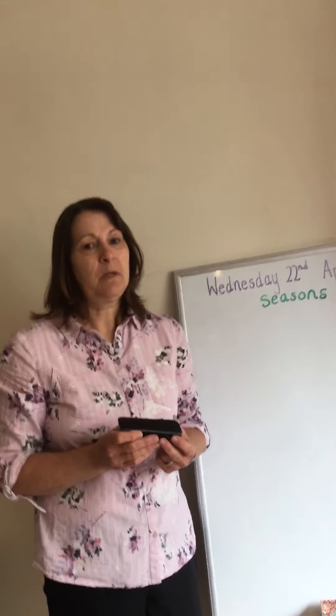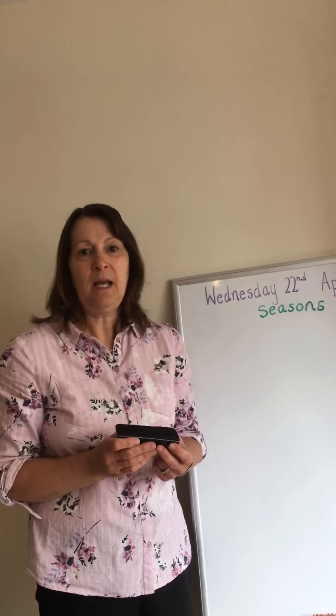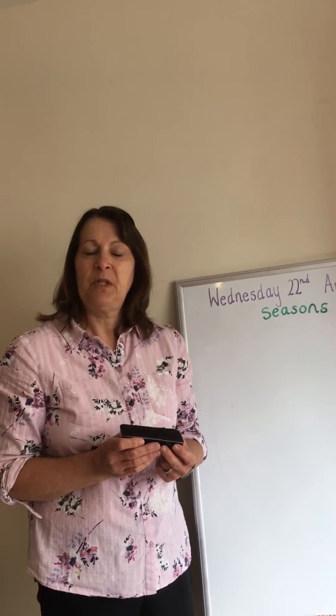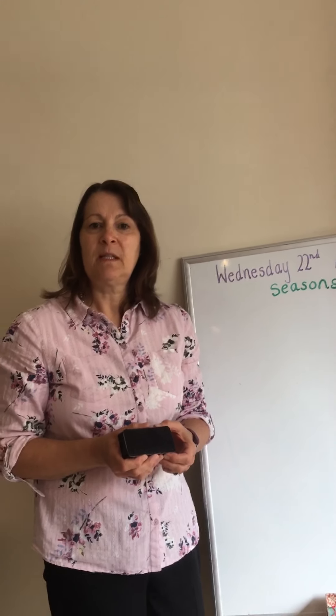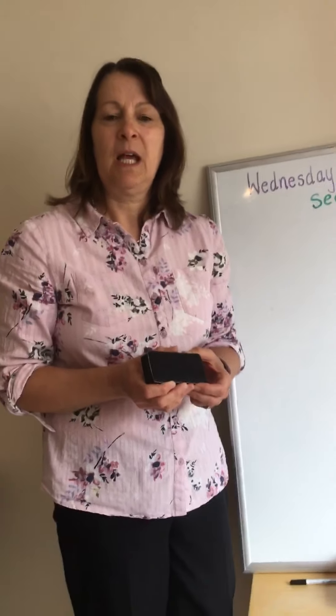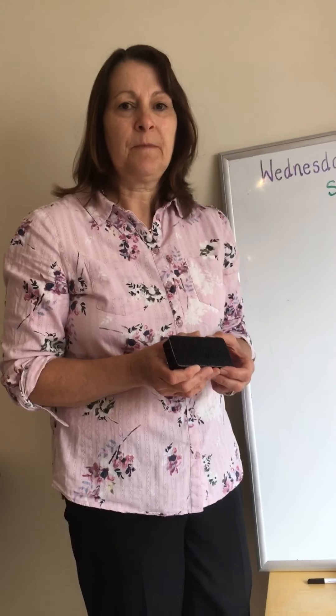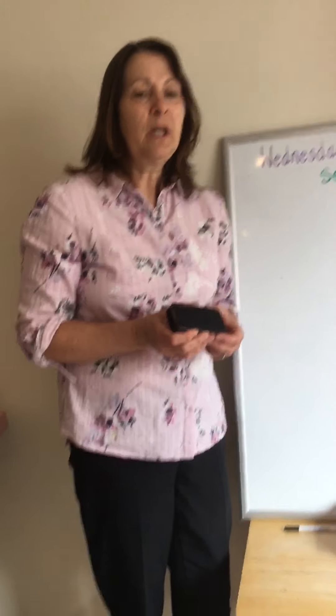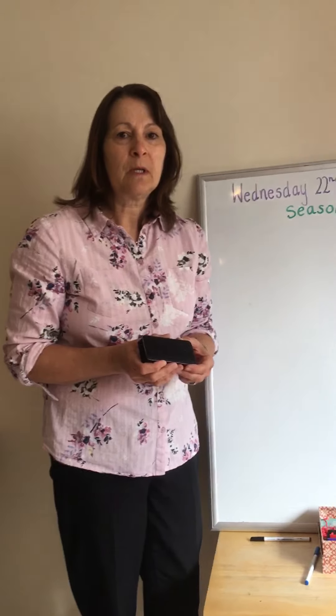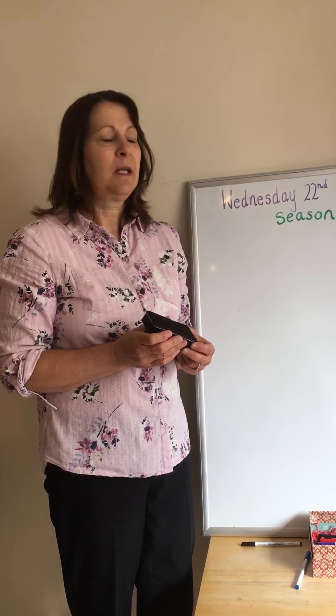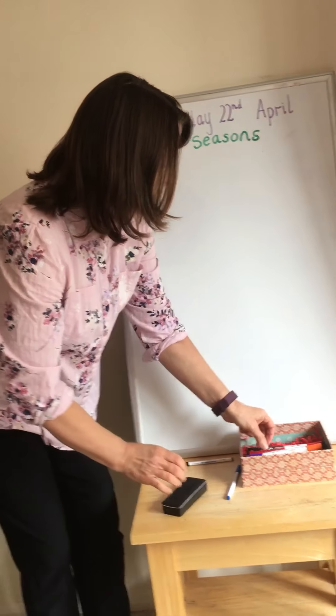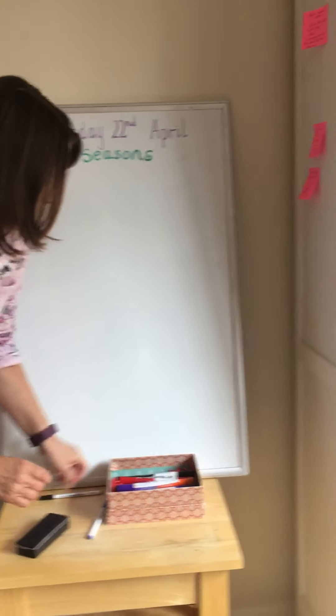You will be going to bed when it's still light. Perhaps you can look at mummy or daddy's phone and see at what time the sun is setting each evening and it will be changing. The longest day is in June and then the days will start to get shorter again.